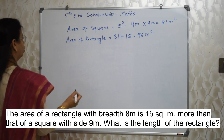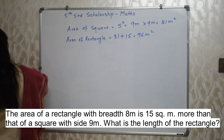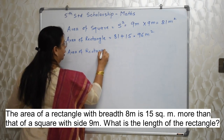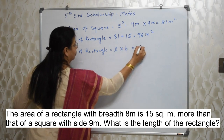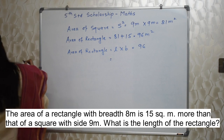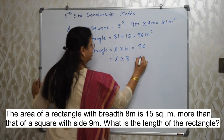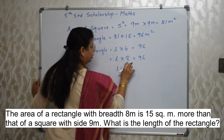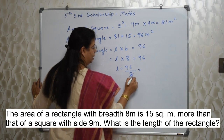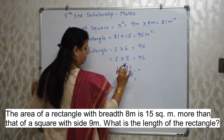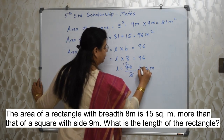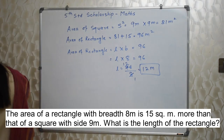This is the area of that rectangle: 96 m². Now we need to find out the length of the rectangle. Formula: area = length × breadth, so length × 8 = 96. Length = 96 ÷ 8 = 12 meter. Length of that rectangle is 12 meter. Very very easy.